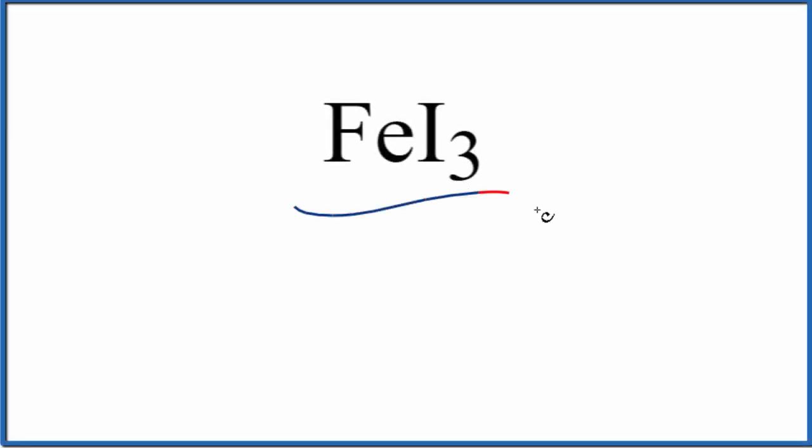Let's write the name for FeI3. The first thing we'll do is note that iron is a metal and iodine is a nonmetal. Metal and nonmetal means we're going to have an ionic compound here.